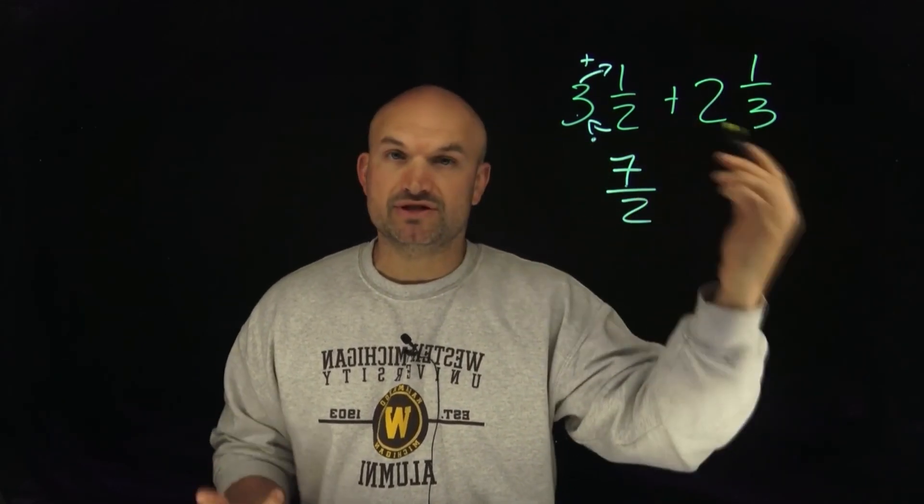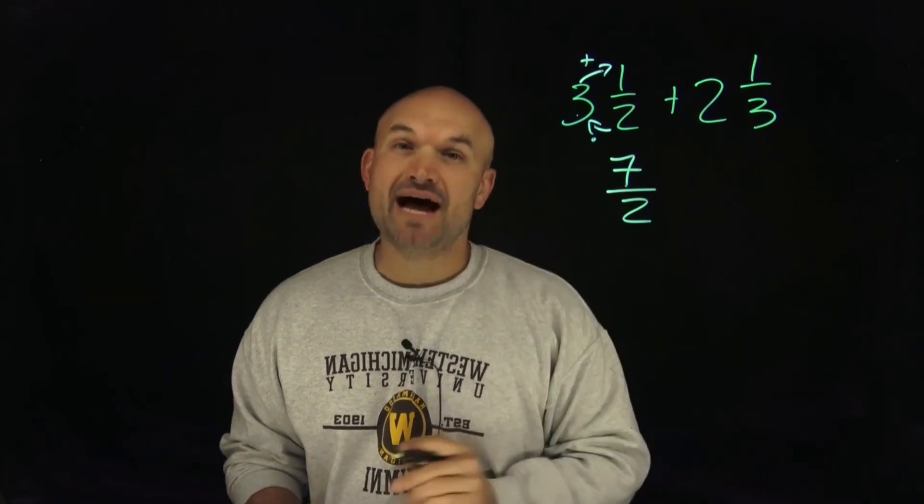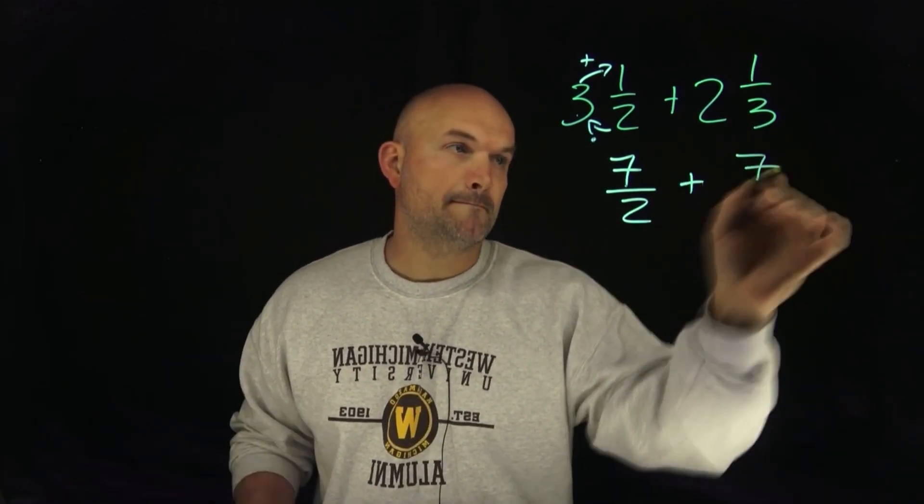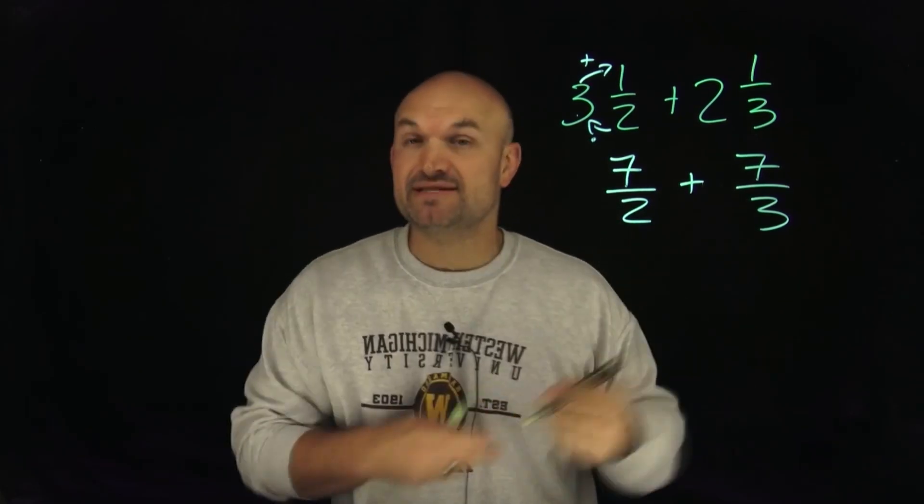In this case, I have 3 times 2 plus 1, which is also going to give me 7, but now this denominator is going to be over 3. Now you can see we have two improper fractions with different denominators.